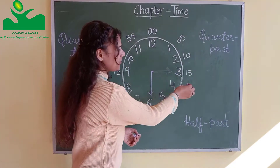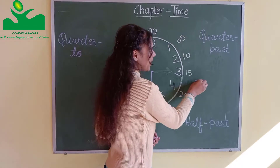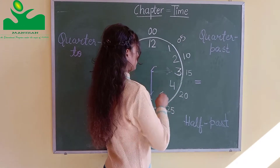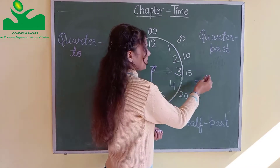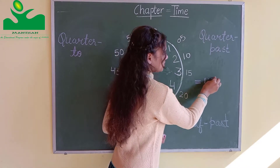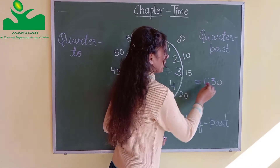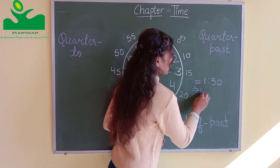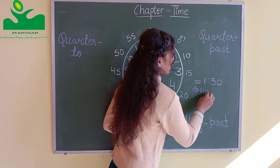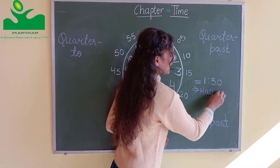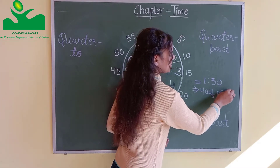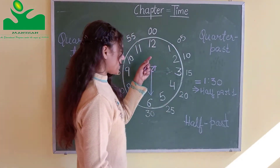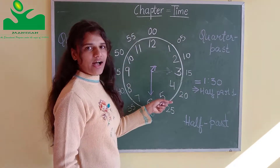And here if we write the timing in numbers, the time is one. And if we write the timing in words, then it is half past one — which means thirty minutes after an hour.